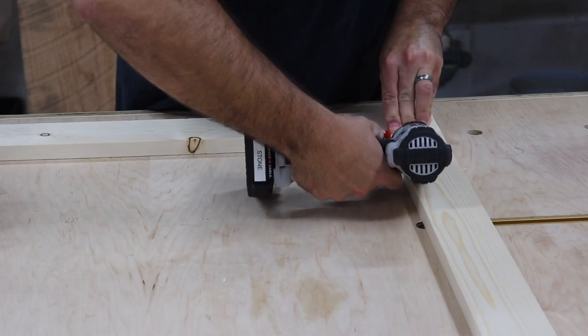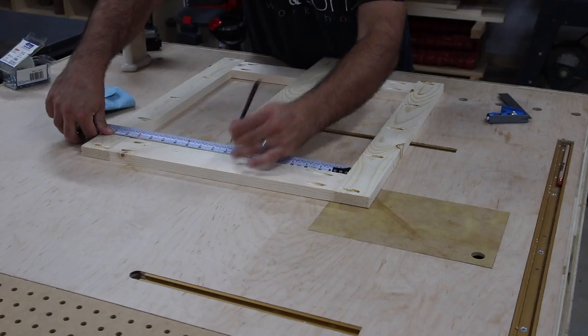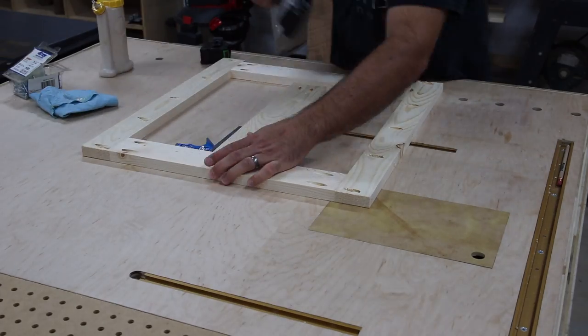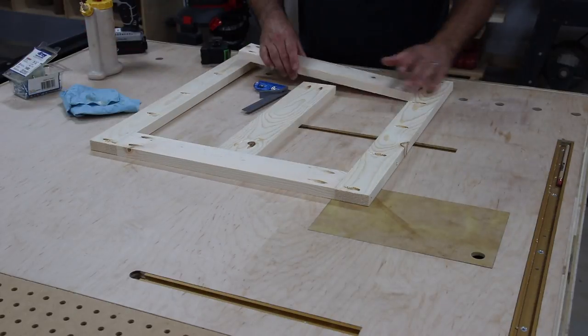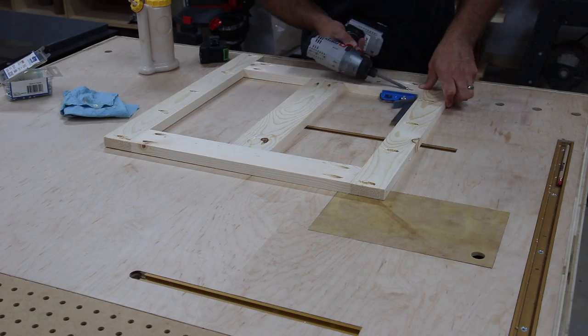I just put all these frames together. We're going to end up with four frames. We want to measure to make sure we have our center dividers in the right location, then glue and screw them. Once we have that part done, we can move on to putting them all together.